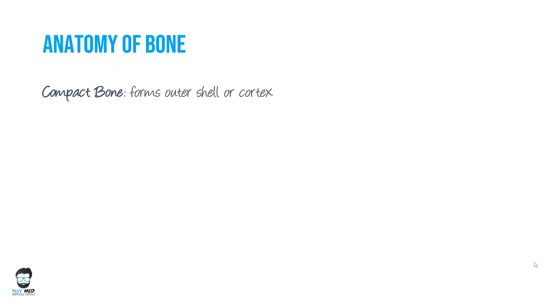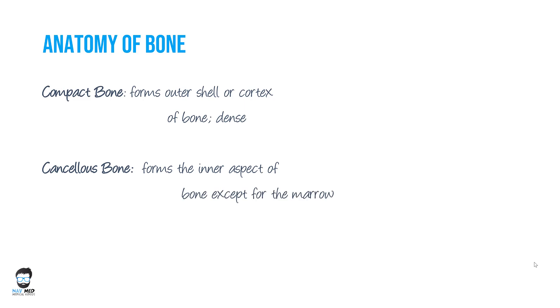As a brief outline, there are two types of bones: compact bone and cancellous bone. The compact or cortical bone is the outer bone — like an eggshell. The cancellous bone is the softer inner part of the bone, except for the marrow.